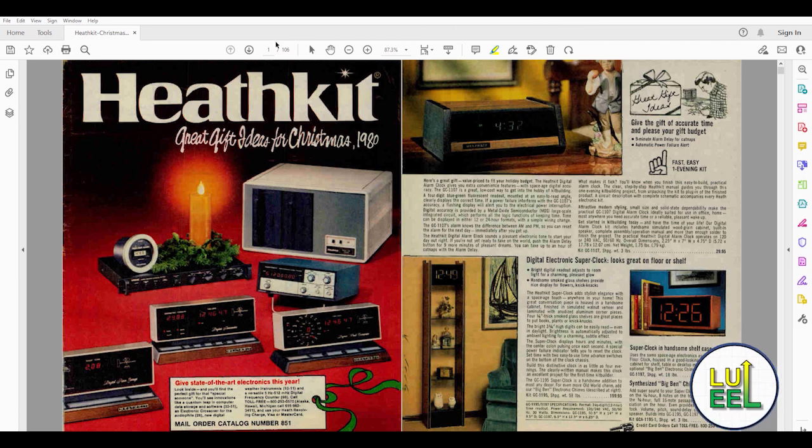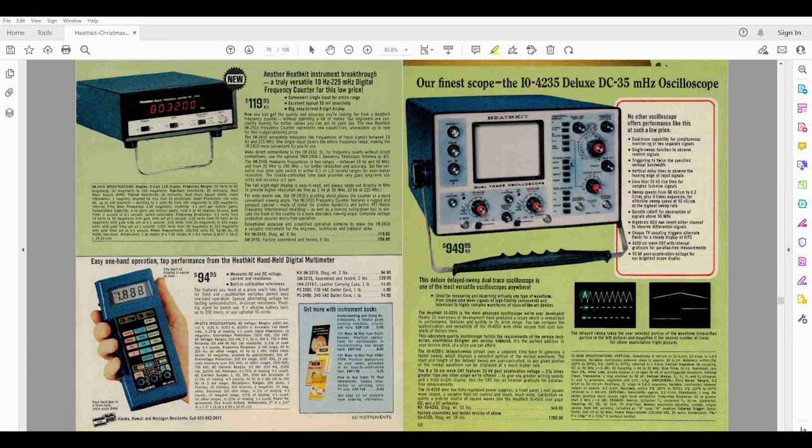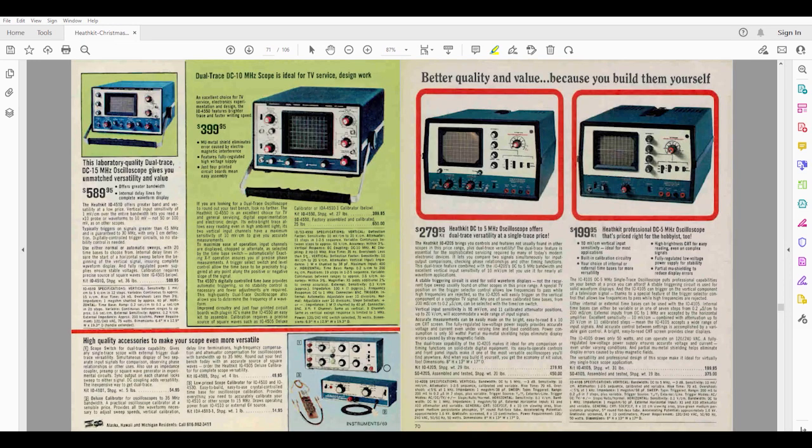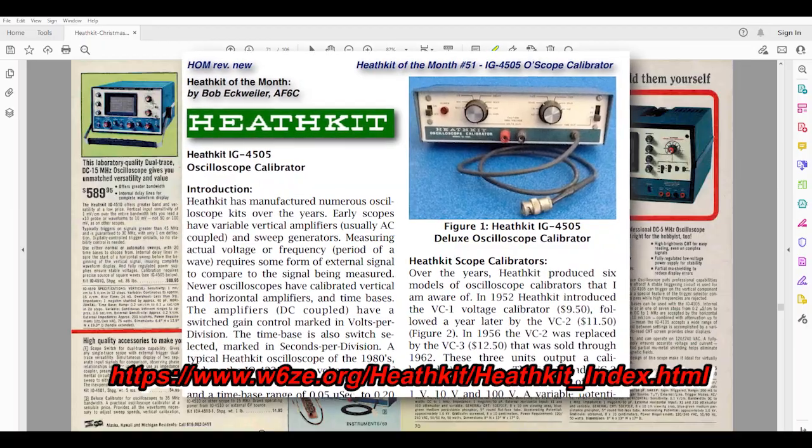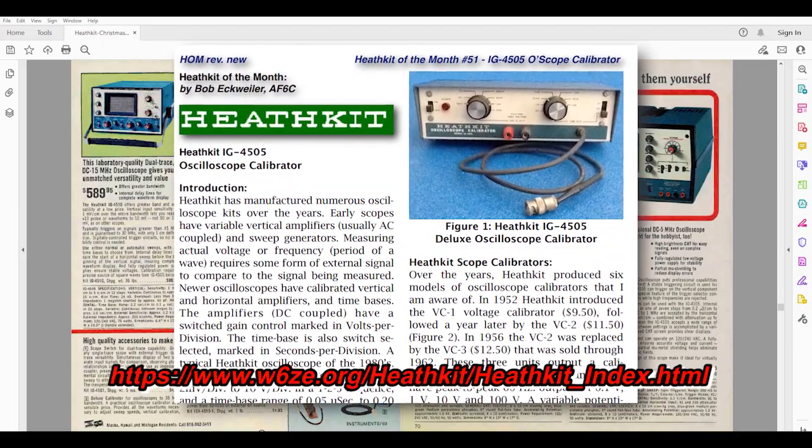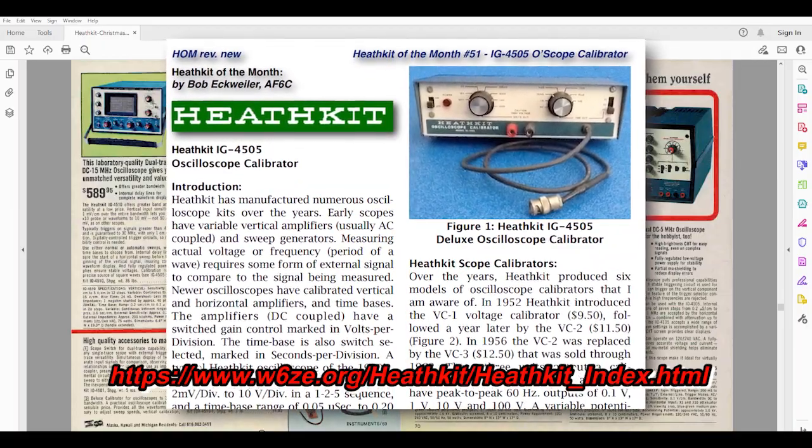Heathkit, of course, manufactured a wide range of kit and factory assembled products, including test instruments like an oscilloscope calibrator. Now, I'm not going to go through the history of their oscilloscope calibrators. There's this Heathkit of the Month article on them that Bob Eckweiler wrote a few years back, and he did a great job of detailing that bit of Heathkit history.